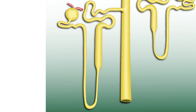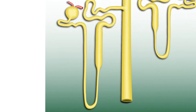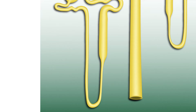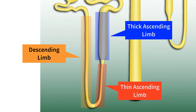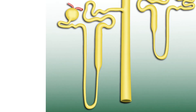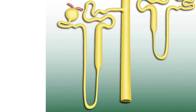The loop of Henle has three main components: a descending limb, a thin ascending limb, and a thick ascending limb. Although that is the order the tubular fluid travels through — first the descending, then the ascending limbs — in order to understand how countercurrent multiplication works, it's best to start at the end of the loop of Henle, that is, starting at the thick ascending limb.